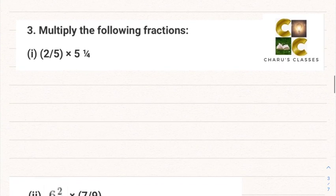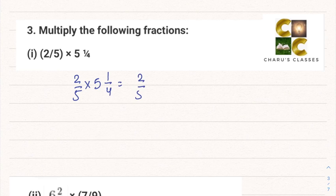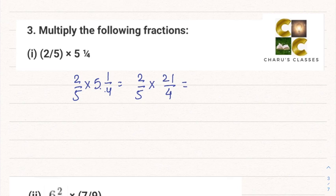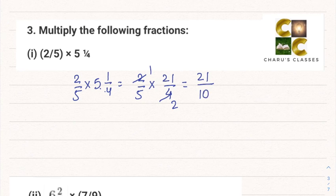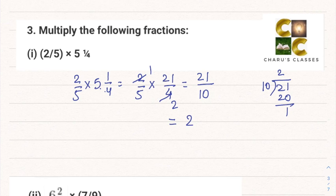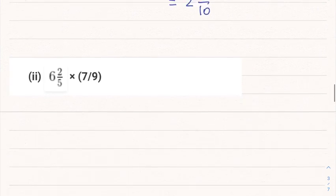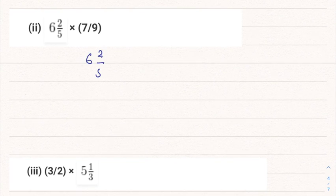Question number 3: Multiply the following fractions. First part: 2/5 multiplied by 5¼. First convert 5¼: 5 into 4 is 20, plus 1 gives 21/4. Now 2 and 4 can be cancelled — 2 ones are 2, 2 twos are 4 — so we get 1 into 21 = 21, and 5 twos are 10. This is improper so it can be written as 2 and 1/10.